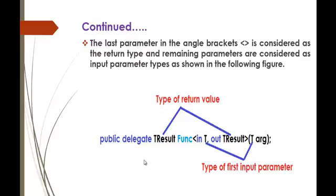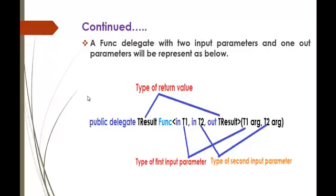You can observe this is how you initialize a Func Delegate. The last parameter in the angle brackets is considered as the type — what this Func Delegate is going to return — and the remaining parameters are considered as input parameters. T specifies the type of the input parameter and tResult specifies the return type of that Func Delegate. You can observe Func Delegate with two input parameters and one output parameter — the last parameter in the Func Delegate represents the type of the return value. So T1 and T2 are the types of the first and second input parameters respectively.